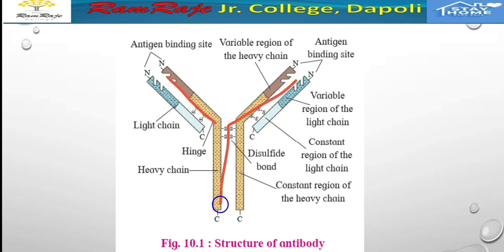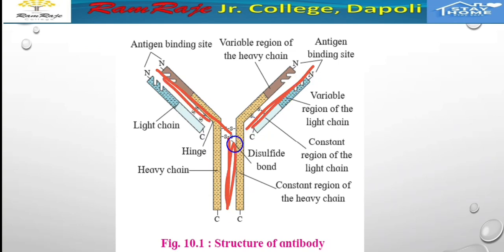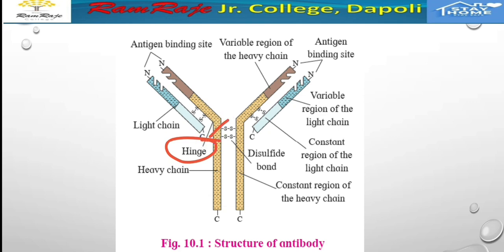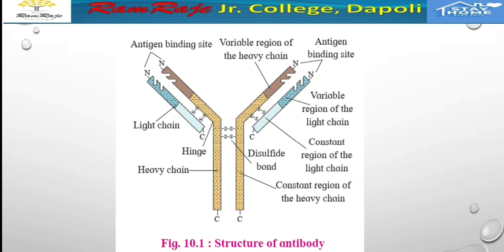This is the Y shape of the antibody. The region holding together the arm and stem of the antibody is termed as the hinge region. Each chain of an antibody includes two distinct regions: the variable region and the constant region. The variable region constitutes the antigen binding site.